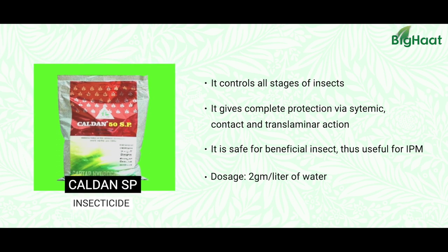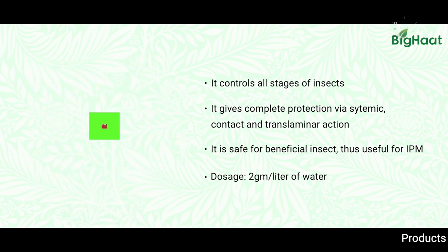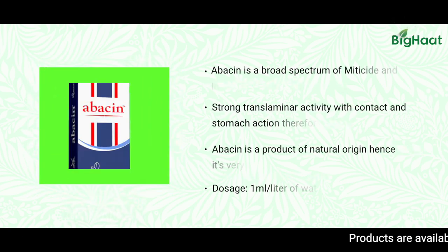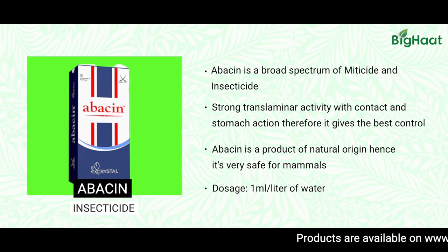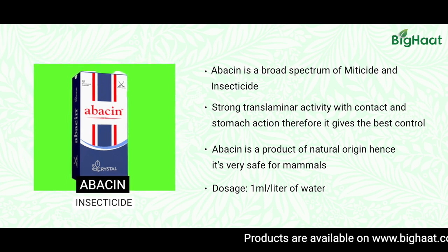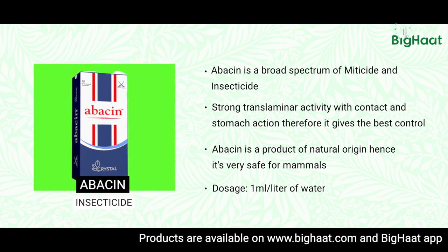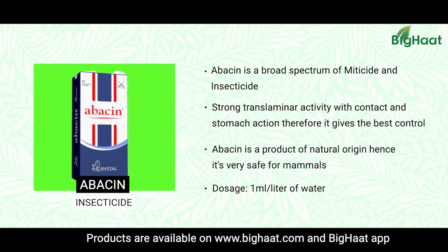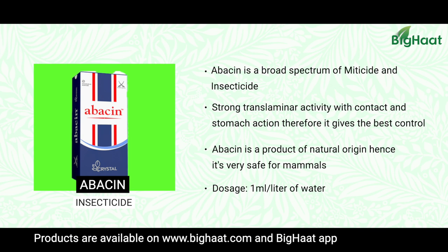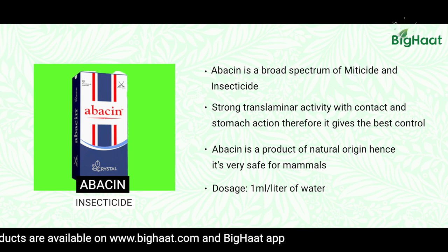Another product is Coragen SP, which can be used at 2 grams per liter, and another one is Abacin, used at 1 ml per liter. These insecticides can be used at weekly intervals for better control of Tuta absoluta attack.